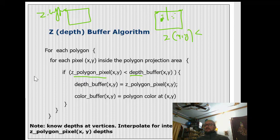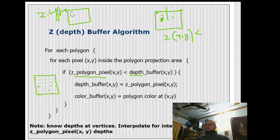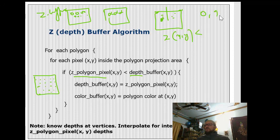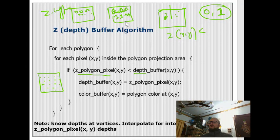We initialize the Z-buffer for every pixel of the screen. Some books initialize all pixels to zero, some to infinity. Since our depth range is 0 to 1, we initialize all pixels in the Z-buffer to the maximum value of 1, representing the farthest possible depth.